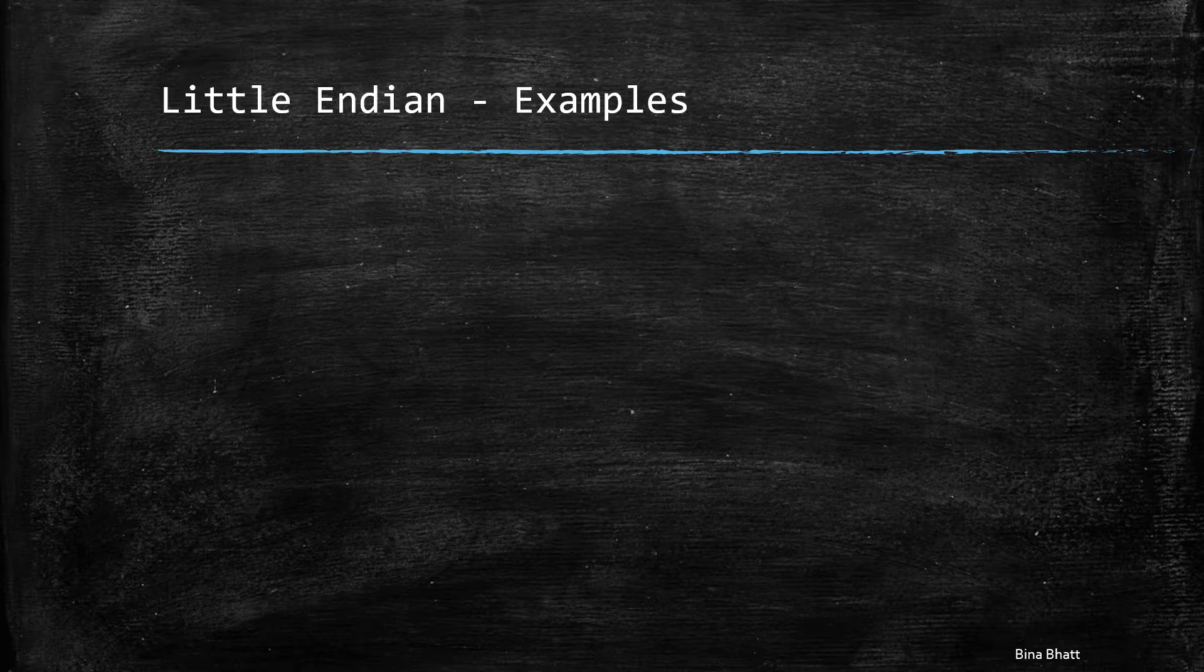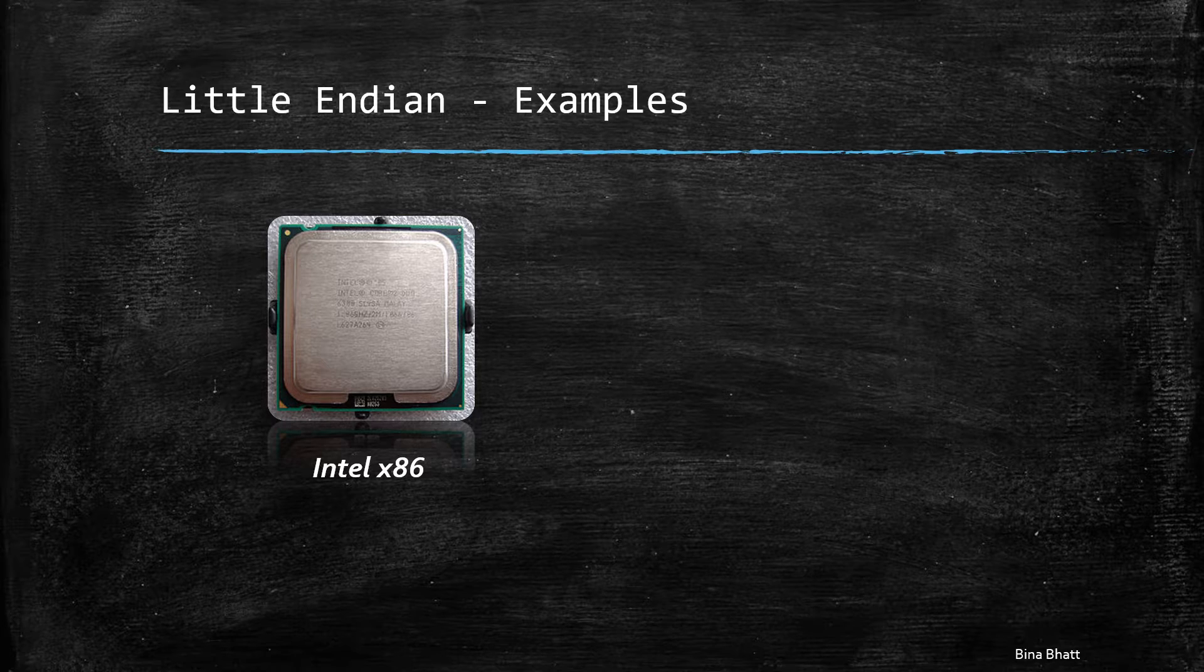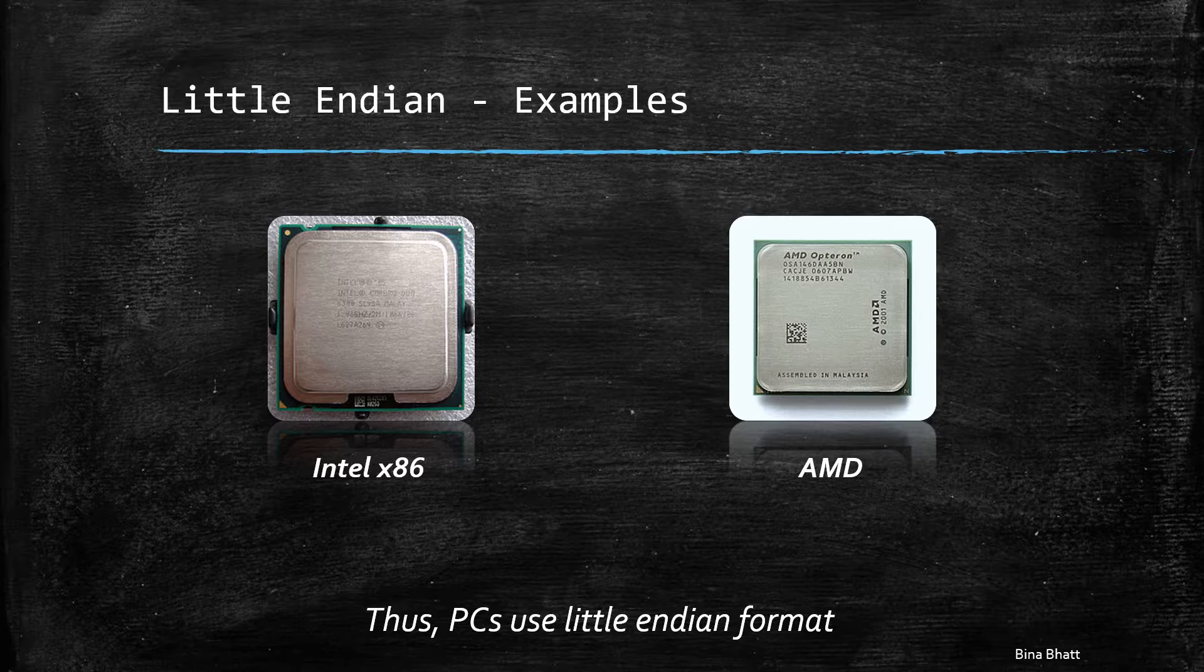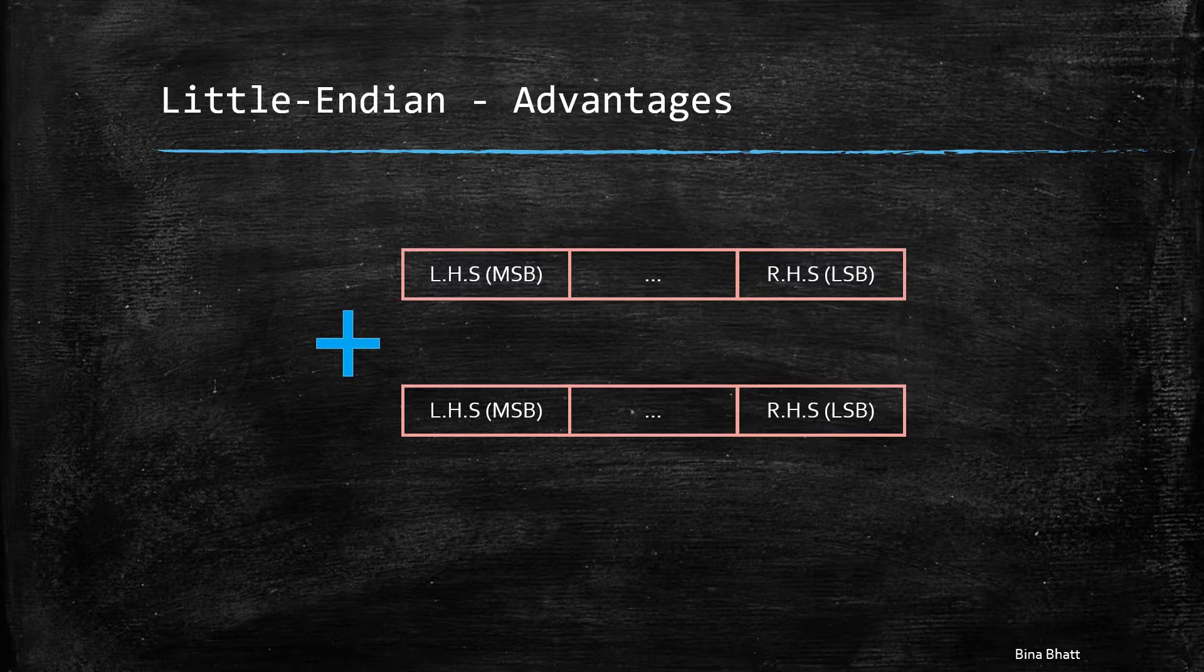Little endian also has its own set of advantages and that is the reason why it is used in Intel processors like x86 and AMD, which means most of our personal computers use little endian. This byte order is preferred due to the ease that it provides in certain operations.